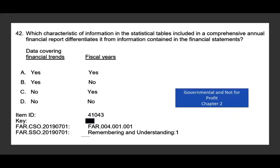Which characteristic of information in the statistical tables included in a Comprehensive Annual Financial Report (CAFR) is differentiated from the information contained in the financial statements? Does CAFR include data covering financial trends? The answer is yes. Here you have to memorize — it's about remembering and understanding. So immediately we take out C and D. Does it include prior fiscal years? Yes, it does. So the answer includes data covering financial trends and prior fiscal years — both are acceptable. This topic is covered in my governmental and not-for-profit chapter two.